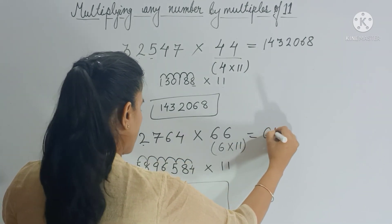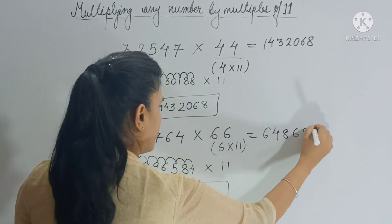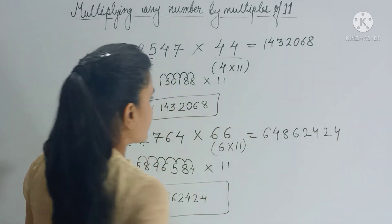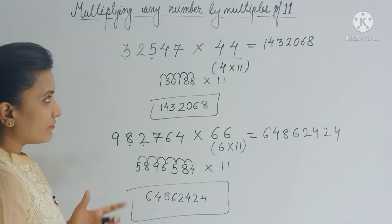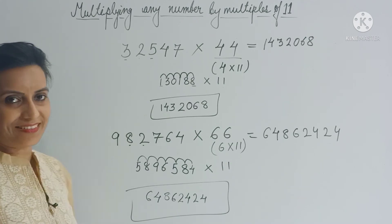So you get 64862424. So you can see that this trick is very simple. How quickly without writing much we got the answer.